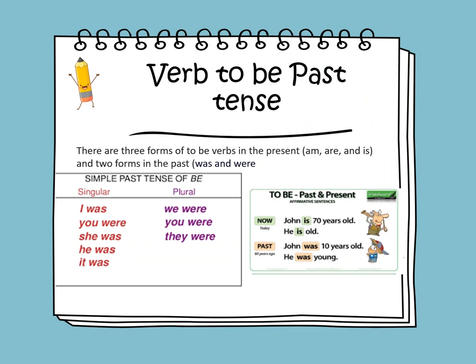In the previous video, we learned about verb to be in the present tense. Today, we will learn about verb to be in the past tense. There are three forms of verb to be in the present: am, are, and is. But the two forms in the past tense are was and were. So verb to be in the past tense can be was or were.